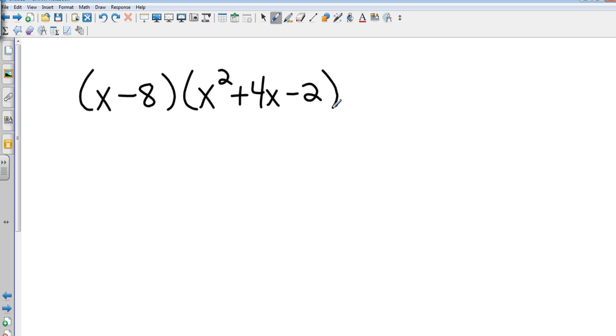Okay, last example. When I'm multiplying a binomial times a trinomial, okay, the first one is a binomial, two terms. Second one is a trinomial, three terms. I can't use the FOIL method, okay, because there are more than four terms.